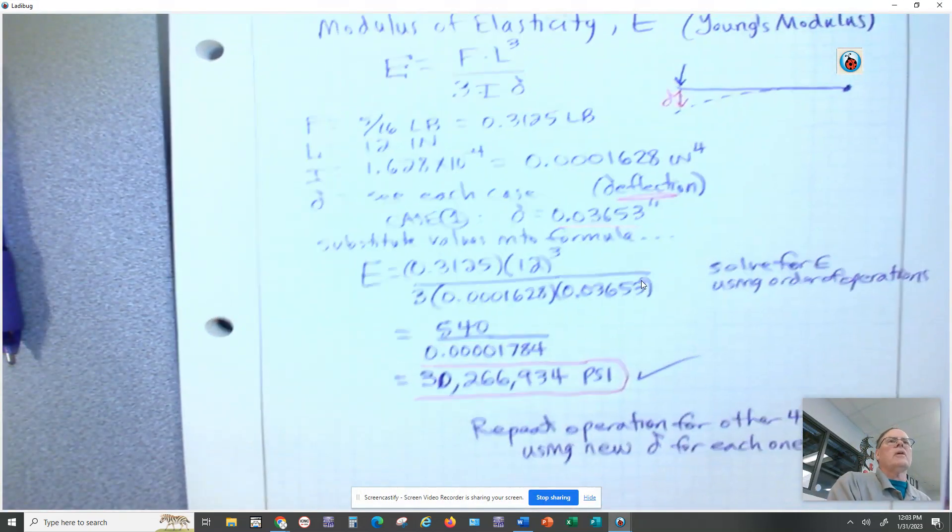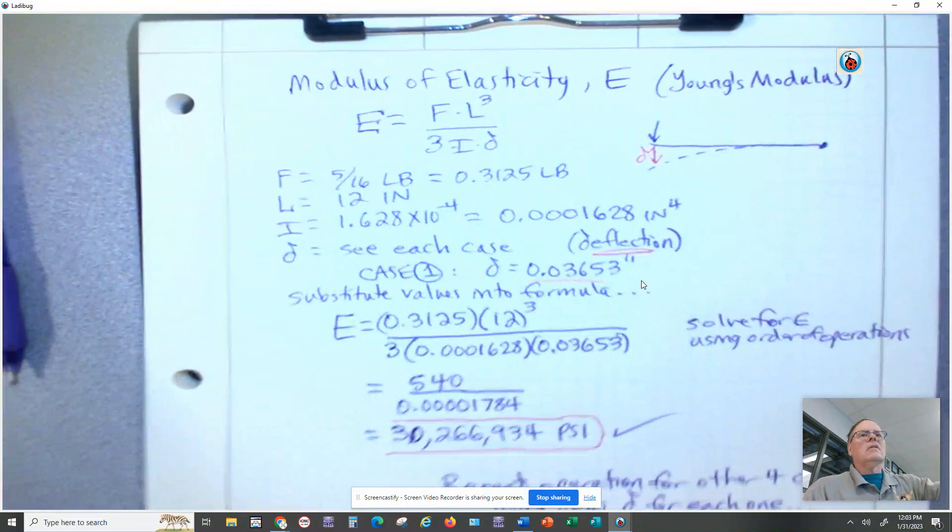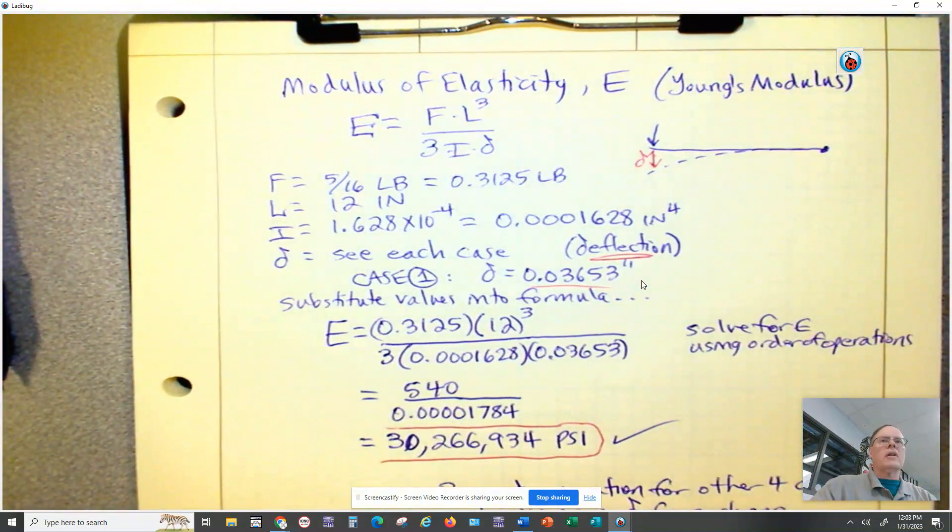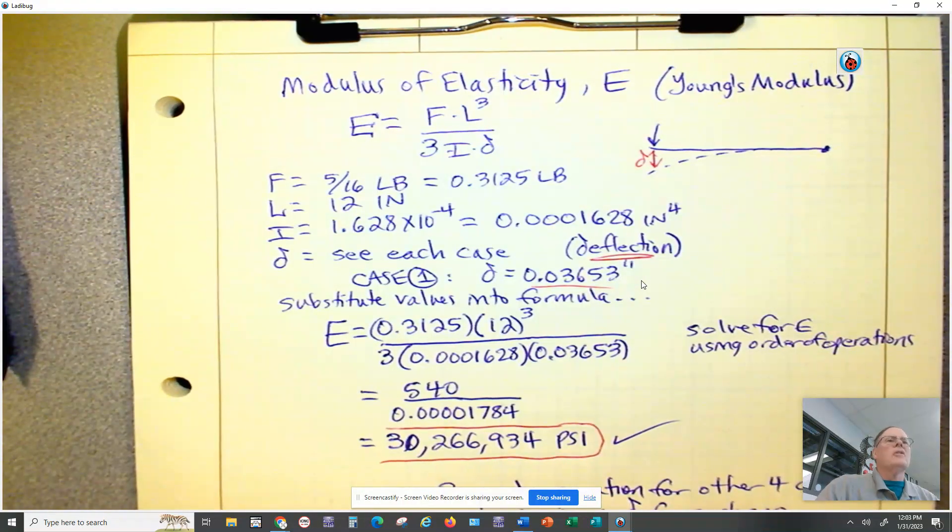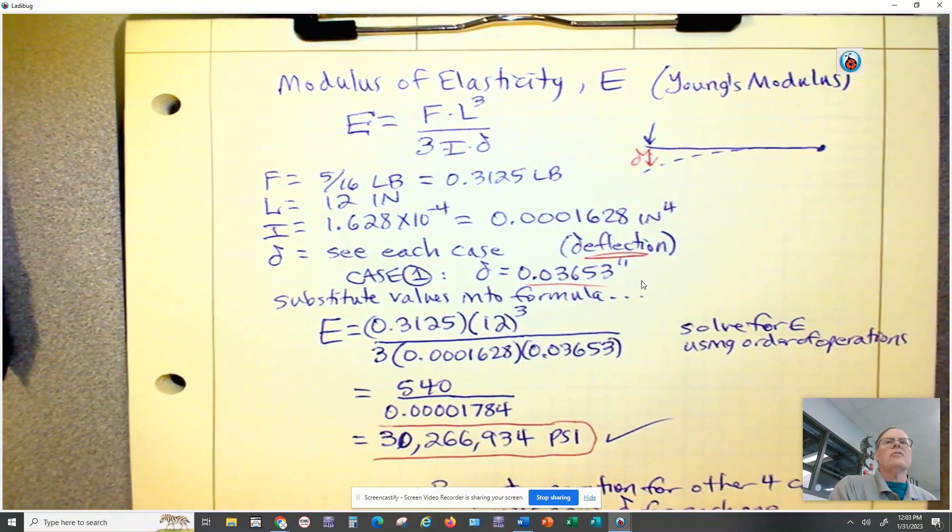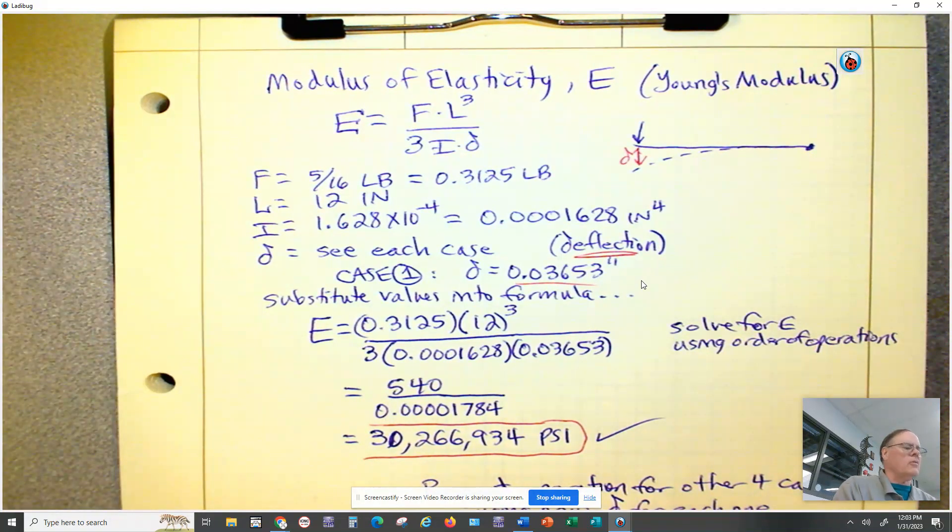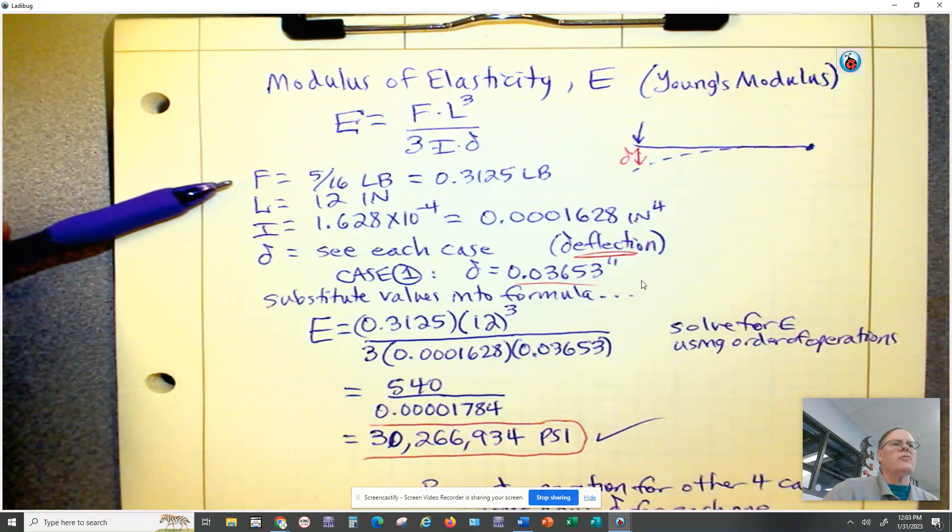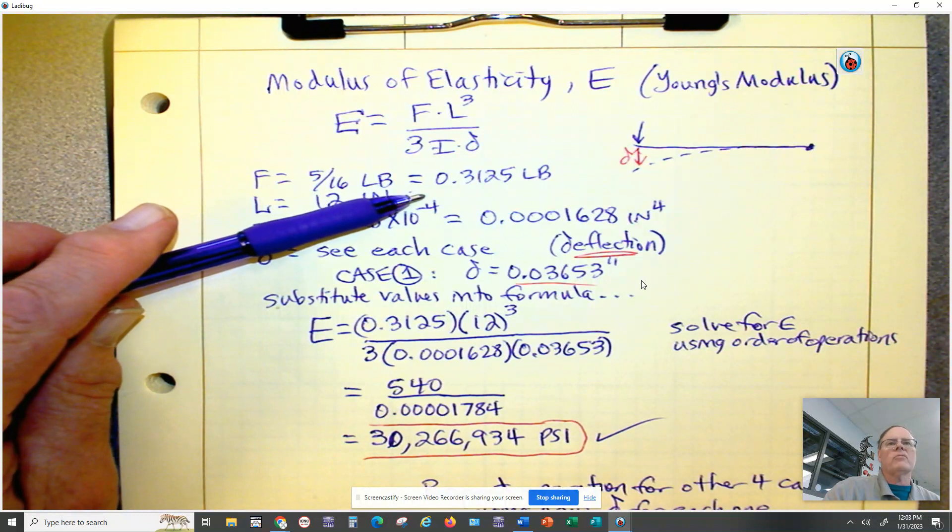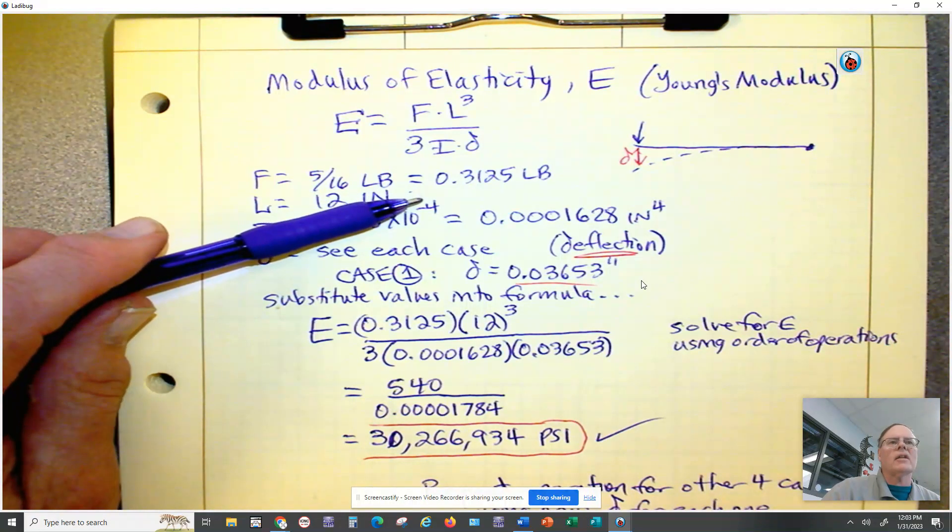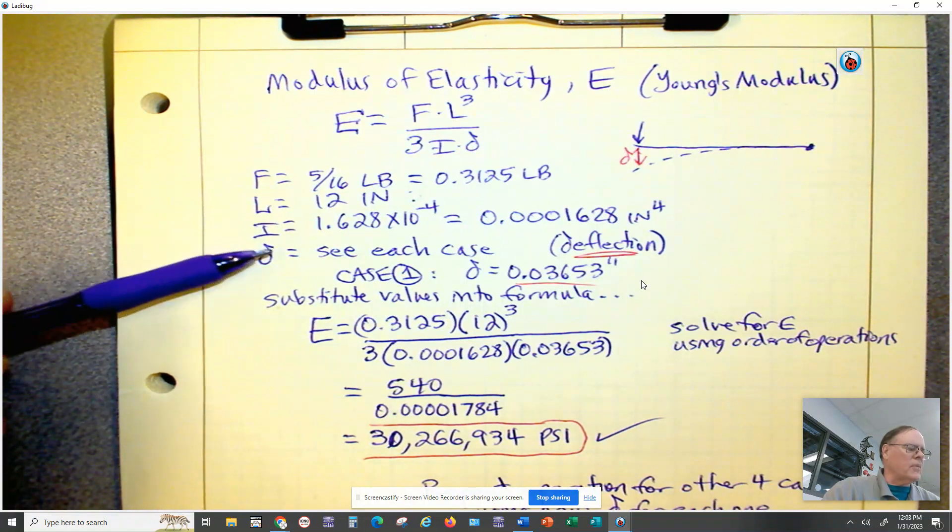Here I have on my little Elmo device, I can show you the calculation required. What we have here is the formula E equals F L cubed over 3ID. They're giving us the force is 5/16. I just did 5 divided by 16 and I got 0.3125 pounds, a very light load because it's a very thin piece of wood.